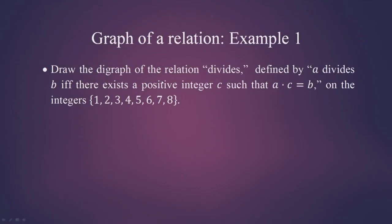Now let us look at another example. We are asked to draw the digraph of the relation 'divides', defined as: A divides B if and only if there exists a positive integer C such that A × C = B. The set of integers on which this relation is defined is {1, 2, 3, 4, 5, 6, 7, 8}. The first thing to do is write all ordered pairs corresponding to this relation.